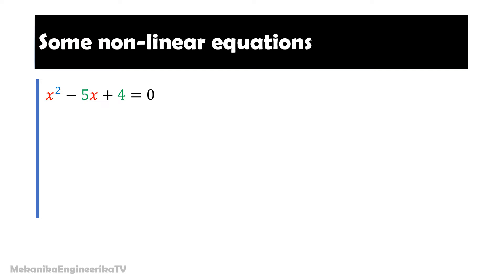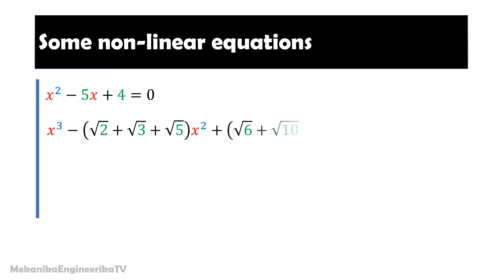The second equation considered here is a cubic equation. It writes: x cubed minus (square root of 2 plus square root of 3 plus square root of 5) times x squared, plus (square root of 6 plus square root of 10 plus square root of 15) times x, minus square root of 30, equals 0. Here again we have considered this equation because it is possible to obtain the solutions analytically.